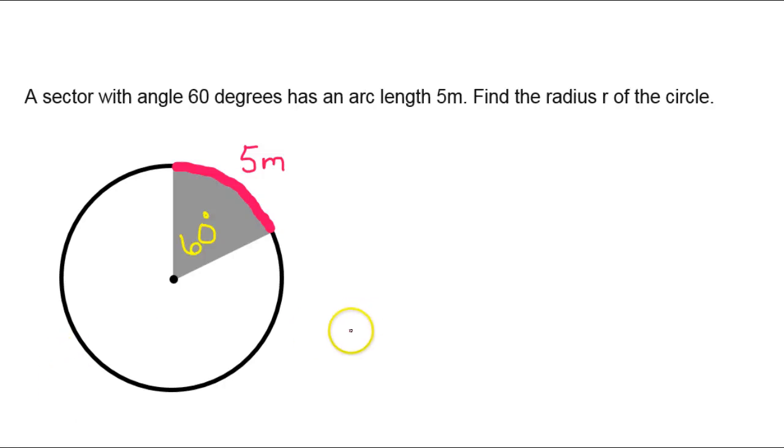All right, this video is a special request. Given a sector with angle 60 degrees, has an arc length of 5 meters, find the radius r of the circle.